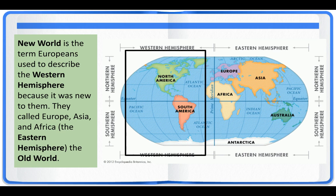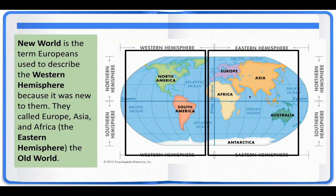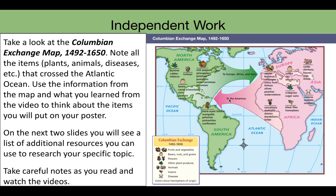So on this side we have the Western Hemisphere with North and South America, and on the right side we have the Eastern Hemisphere — Europe, Asia, and Africa. Today you'll be looking at the Columbian Exchange map. As we look deeper at this map, we'll take a look at the plants, animals, and diseases that crossed the Atlantic Ocean.